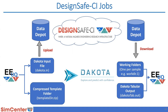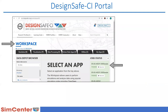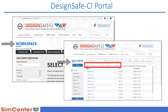You can also access job information from the DesignSafe portal directly. In the workspace, you see a list of jobs and can check job status, access the output folder in the Data Depot, and inspect the Dakota.in file, output file with tabular data, and all the working directories.